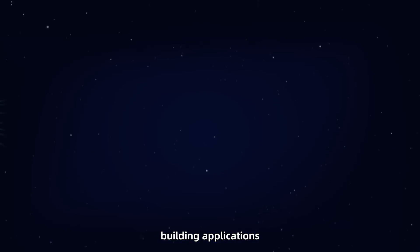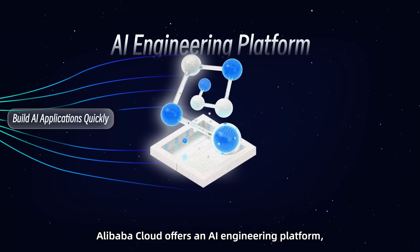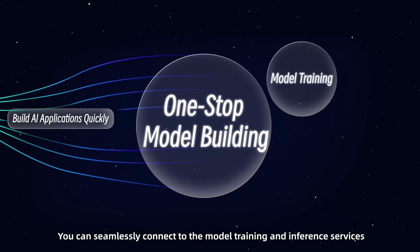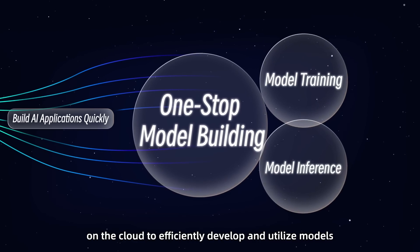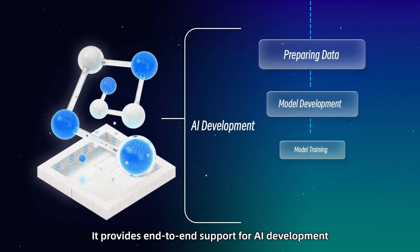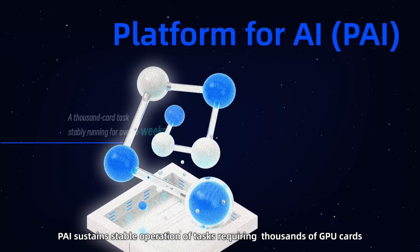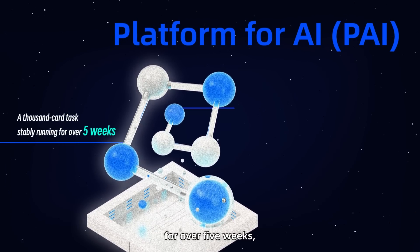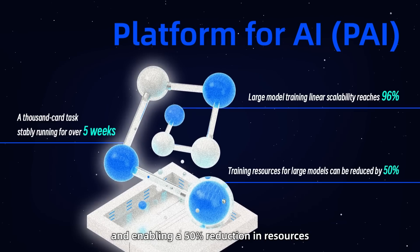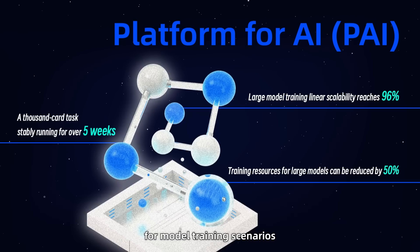Building applications has become key to the utilization of generative AI models. Alibaba Cloud offers an AI engineering platform, Platform for AI, for building models in one place. You can seamlessly connect to the model training and inference services on the cloud to efficiently develop and utilize models. PAI sustains stable operation of tasks requiring thousands of GPU cards for over five weeks, achieving a scaling efficiency of 96% for large model training and enabling a 50% reduction in resources.